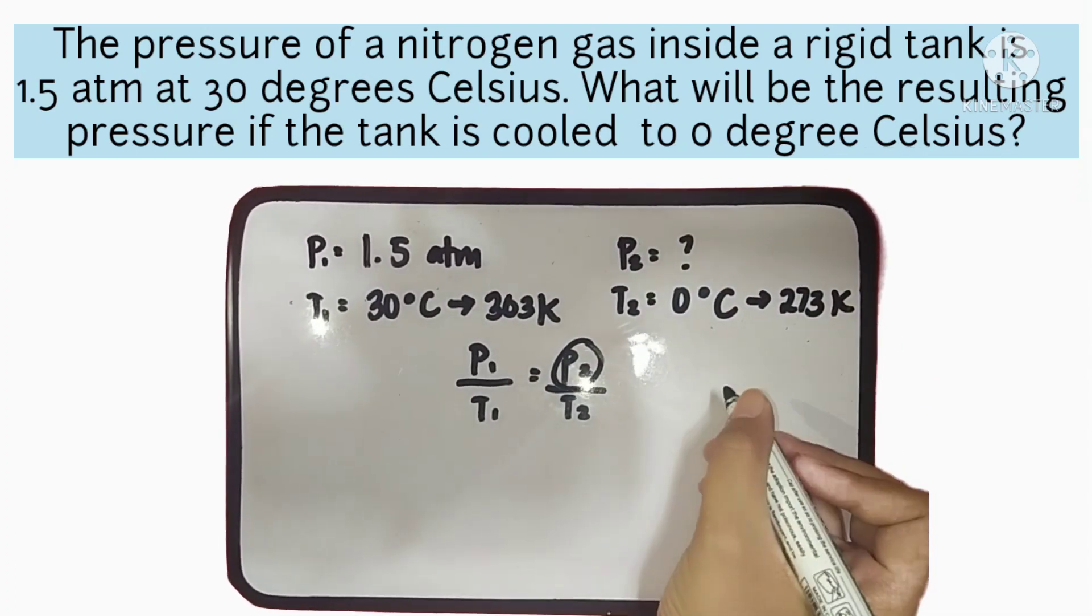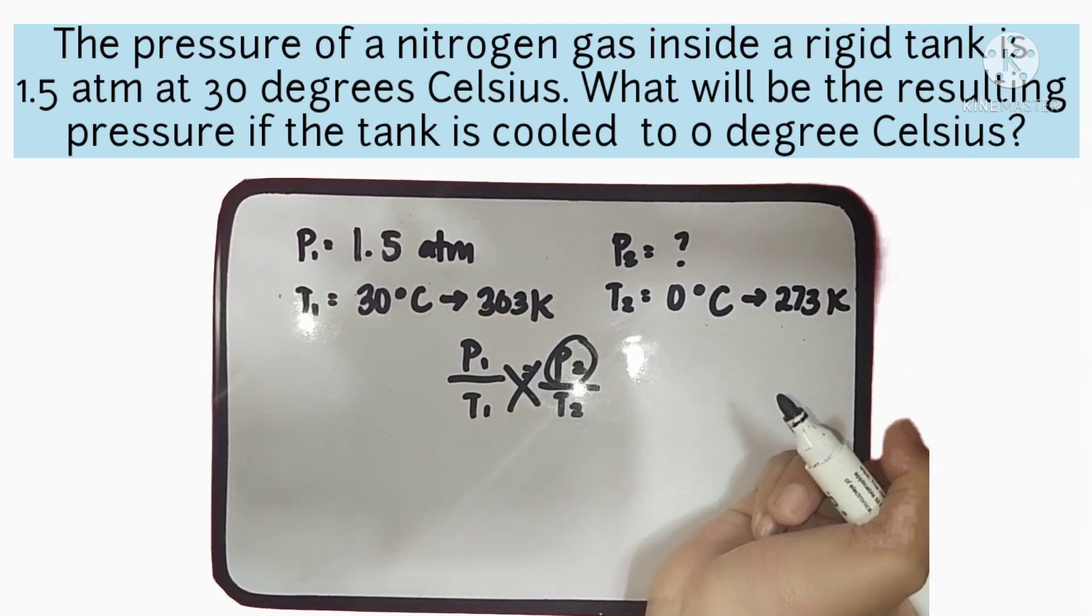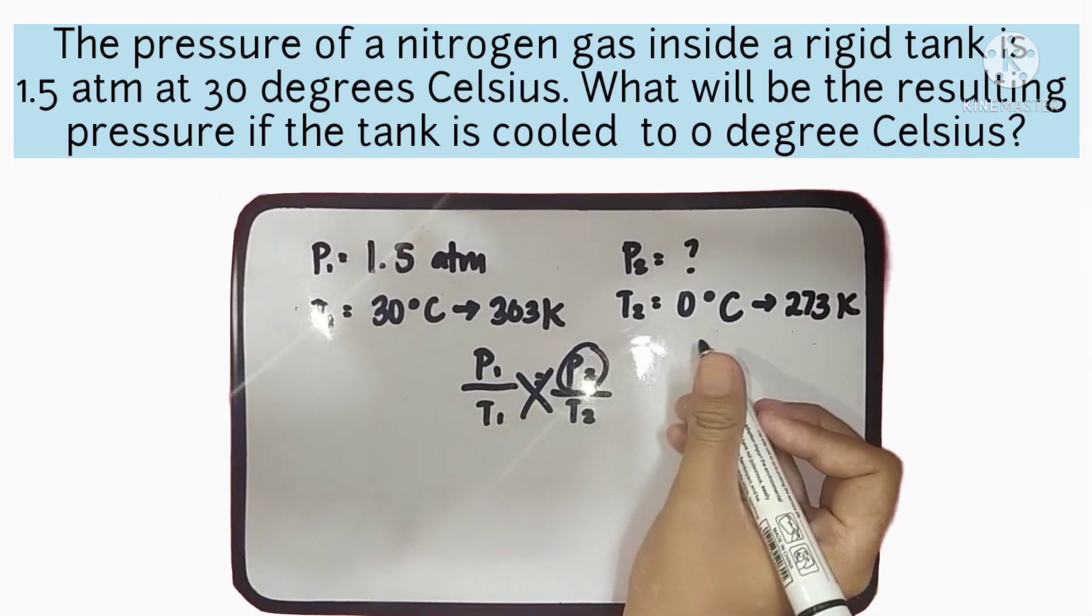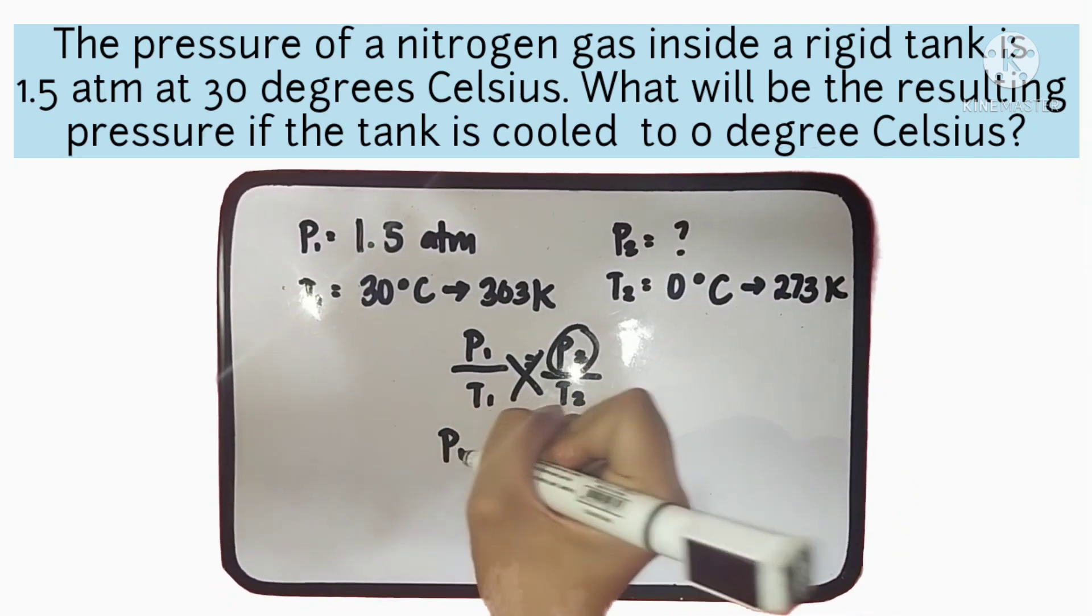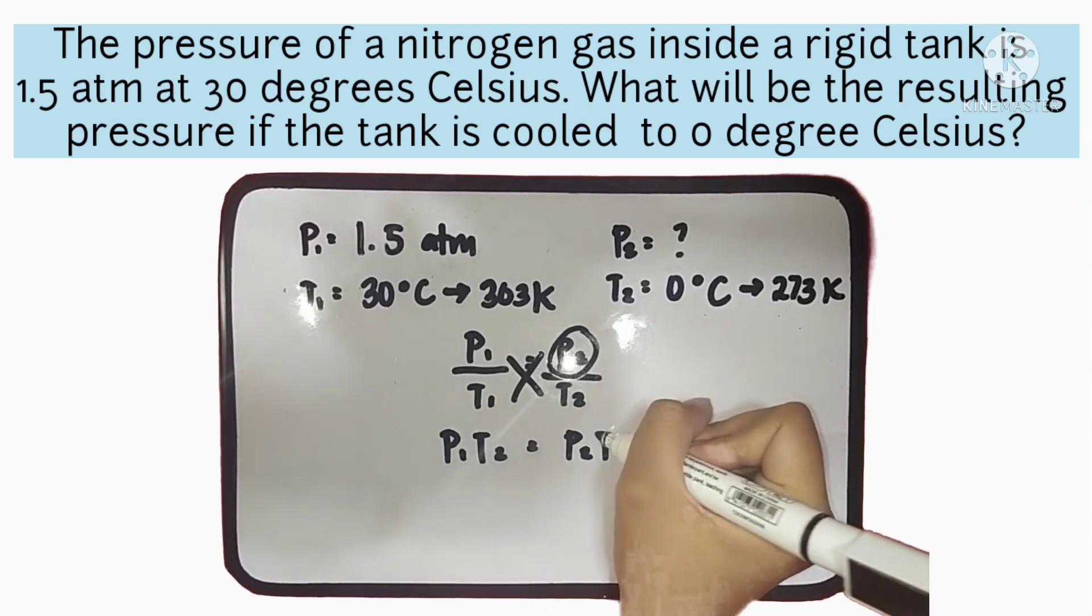To derive the formula, we'll have cross multiplication. So, we'll have P1 times T2 is equal to P2 times T1.